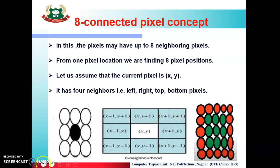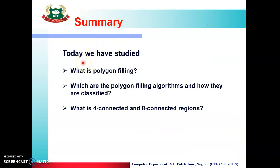So dear students, today we have studied what is polygon filling, which are the polygon filling algorithms and how they are classified. They are classified by pixel level and geometric level. In pixel level there are two algorithms: flood fill and boundary fill algorithm. In geometric level there is only one algorithm: scan line fill algorithm. Finally we studied the concept of 4 connected and 8 connected pixels and how to overcome the problem of 4 connected pixel using the 8 connected pixel.